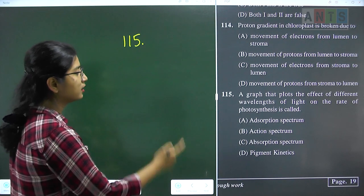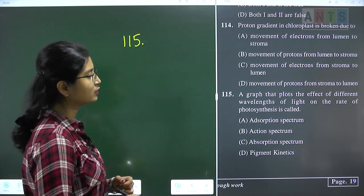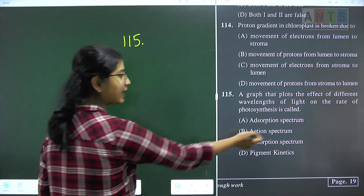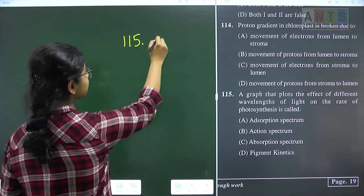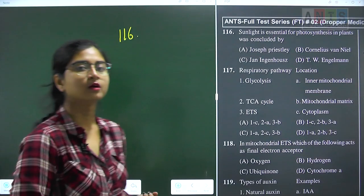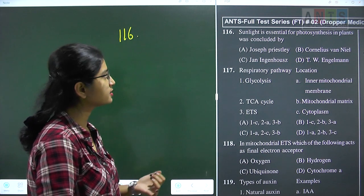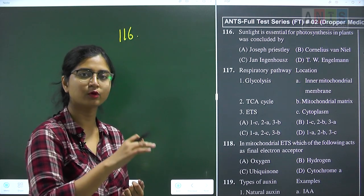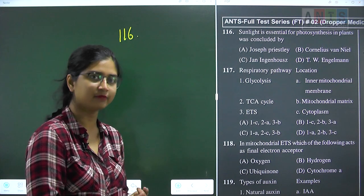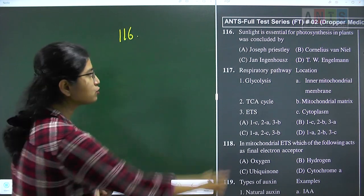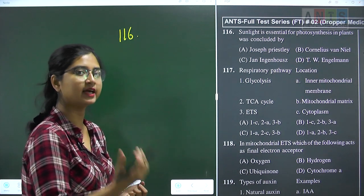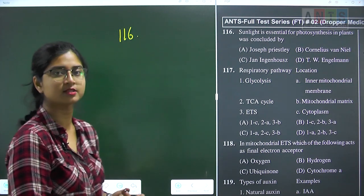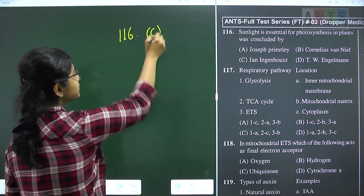Question 115: a graph that plots the effect of different wavelengths of light on the rate of photosynthesis is called the action spectrum of photosynthesis. Question 115 answer is option B. Question 116: sunlight is essential for photosynthesis in plants was concluded by Jan Ingenhousz, who first gave the idea that photosynthesis properly occurs in the presence of sunlight. Question 116 answer is option C.